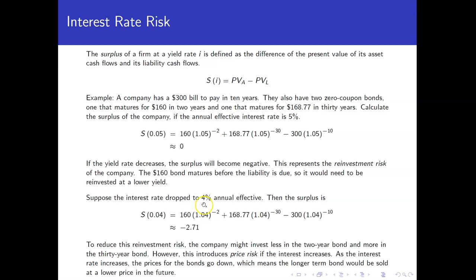So, just as an example, if the interest rate dropped from 5% to 4%, then the surplus—here's your present value of the assets at that 4% interest rate, here is the present value of liability—so our surplus would be negative $2.71. So, we see that the interest rate dropped, the surplus dropped.